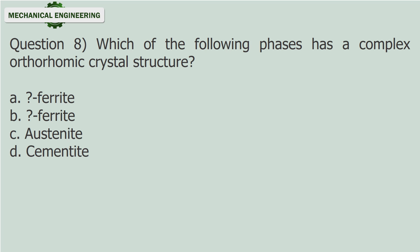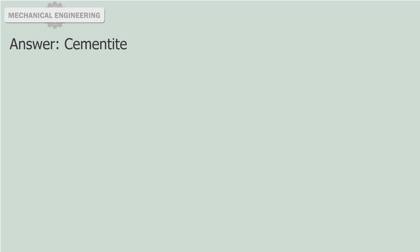Question 8: Which of the following phases has a complex orthorhombic crystal structure? A. Alpha ferrite. B. Delta ferrite. C. Austenite. D. Cementite. Answer: Cementite.